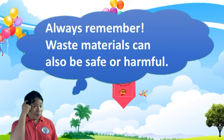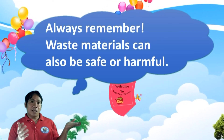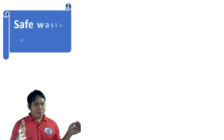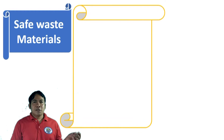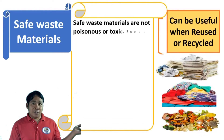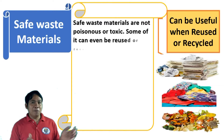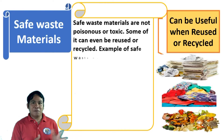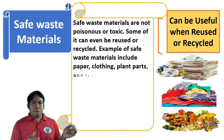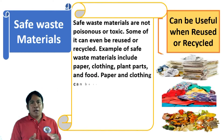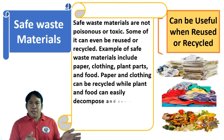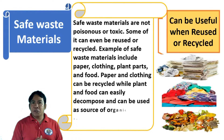Always remember, waste materials can also be safe or harmful. Safe waste materials are not poisonous or toxic. Some of these materials can be recycled. Examples of safe materials include paper, clothing, plants, and food. Paper and clothing can be recycled, while plants and food can easily decompose and can be used as organic fertilizers.